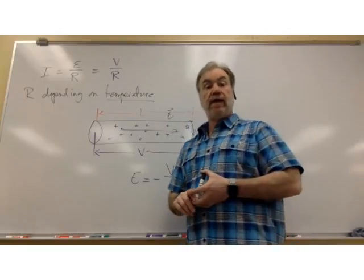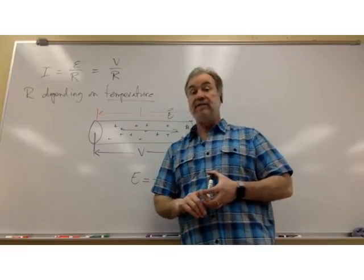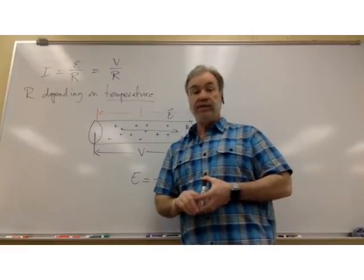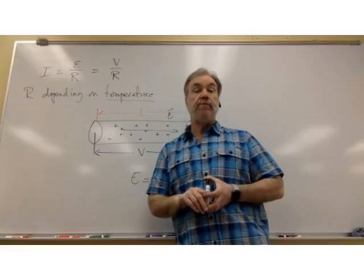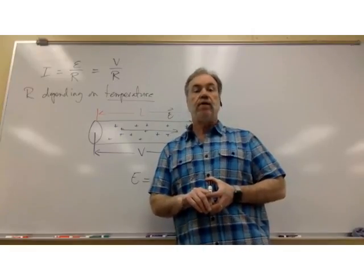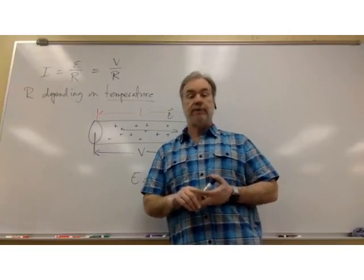And nichrome, as one example, is a material that's designed to have a huge resistance and a huge change of resistance with temperature, as such, nichrome is one example of a class of materials that are called non-ohmic materials.